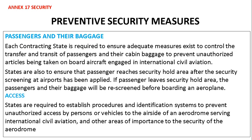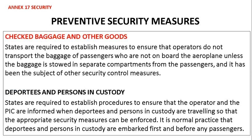Access: states are required to establish procedures and identification systems to prevent unauthorized access by persons or vehicles to the airside of an aerodrome serving international civil aviation and other areas of importance to the security of the aerodrome. Checked baggage: states are required to establish measures to ensure that operators do not transport the baggage of passengers who are not on board, unless the baggage is stored in separate compartments and has been subject to other security control measures.